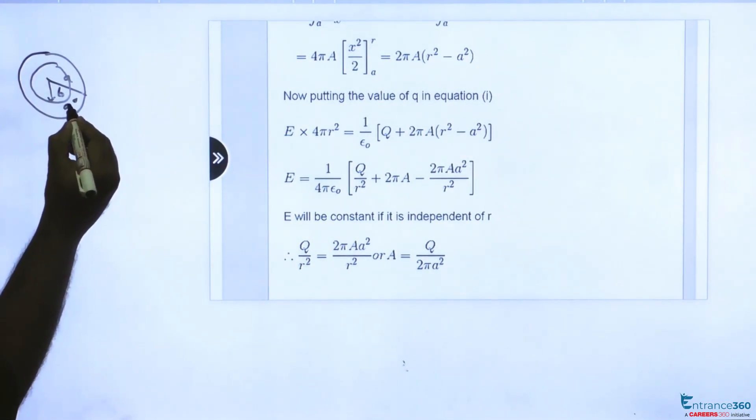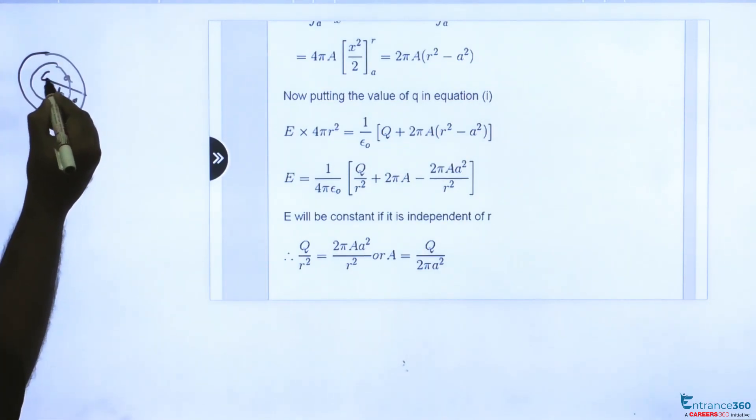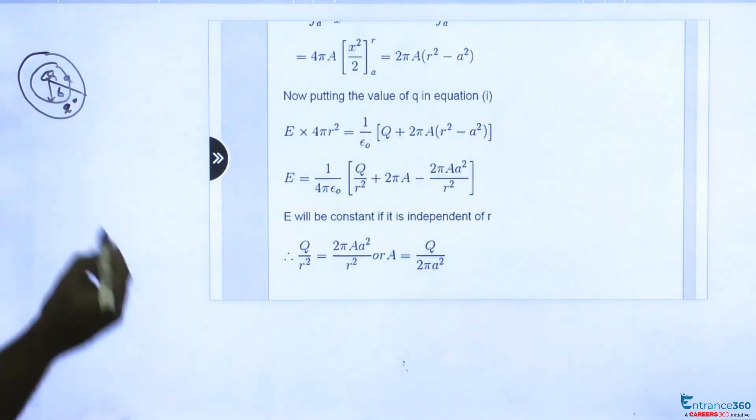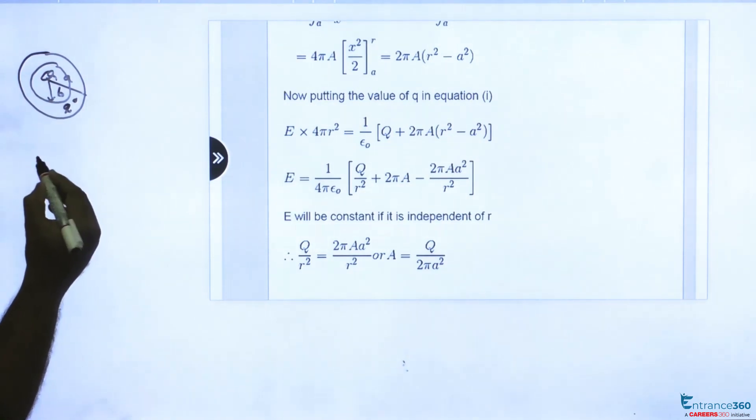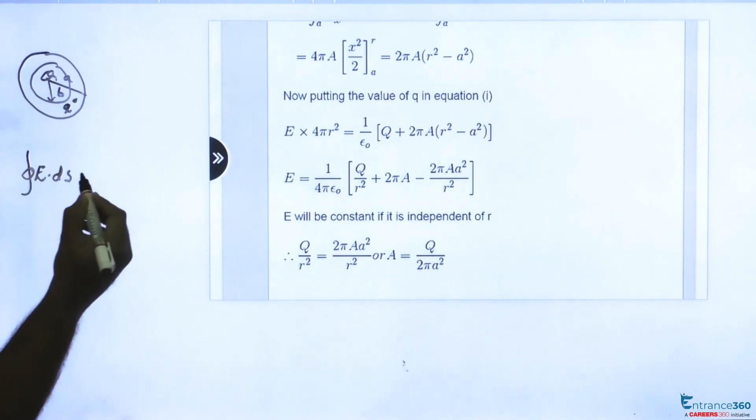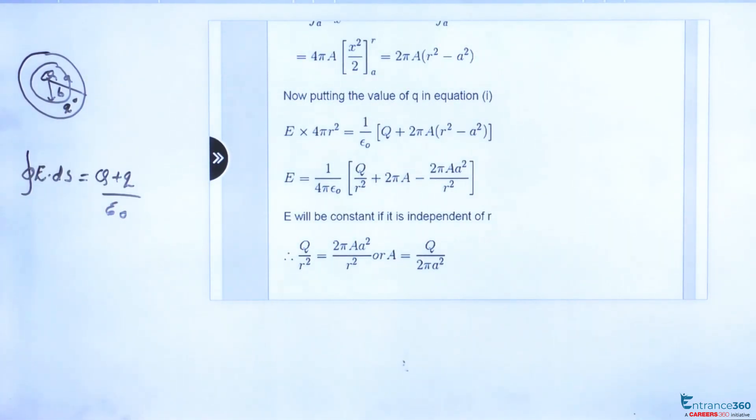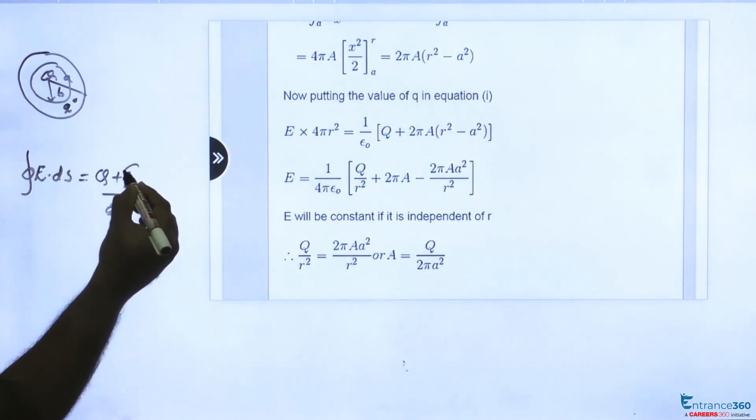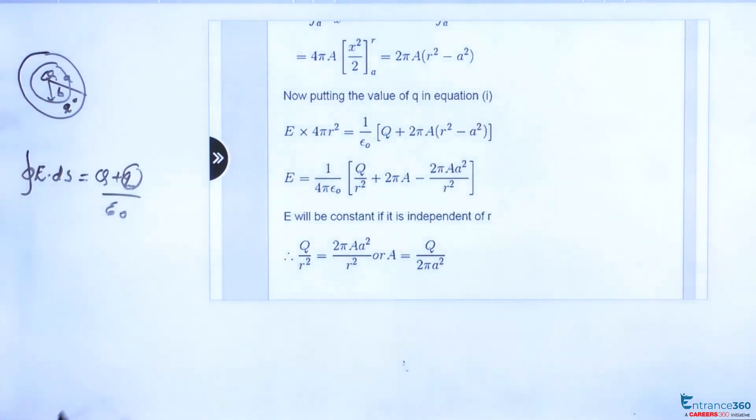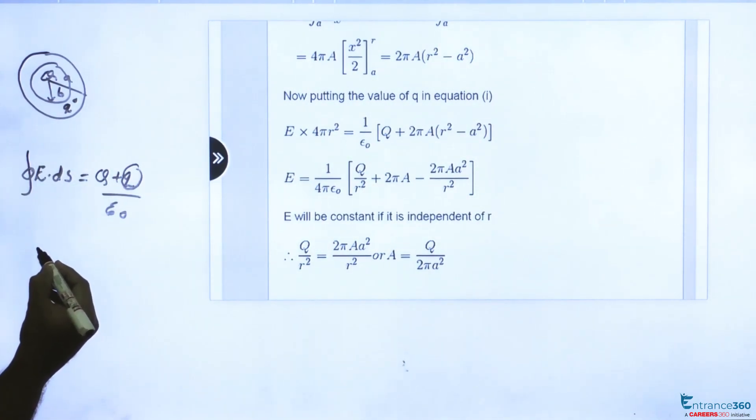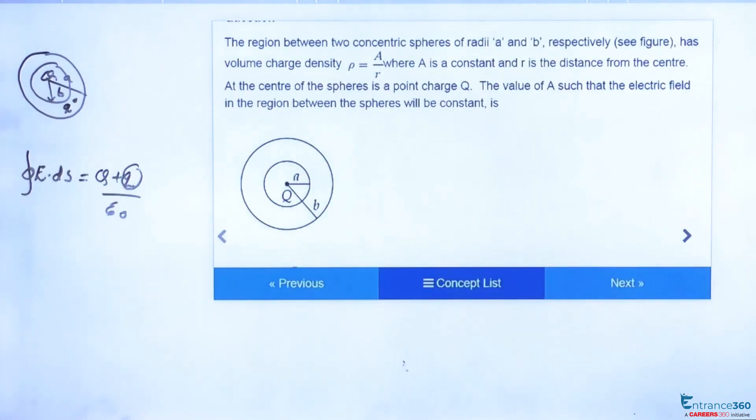Let's assume charge to be small q. So by Gauss law, we have flux E dot ds equals total charge by epsilon 0. So we have to find the charge q. In the question charge density is given as A by R.